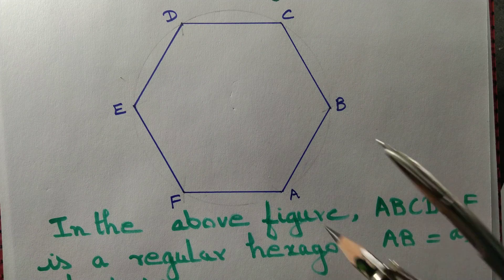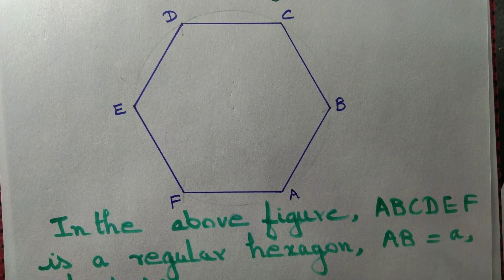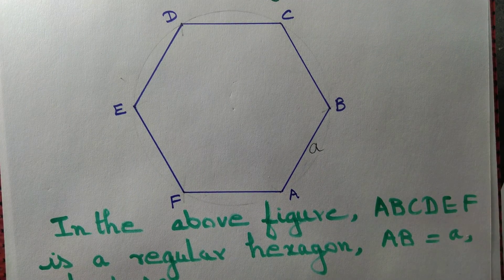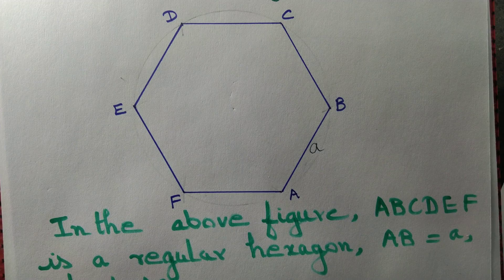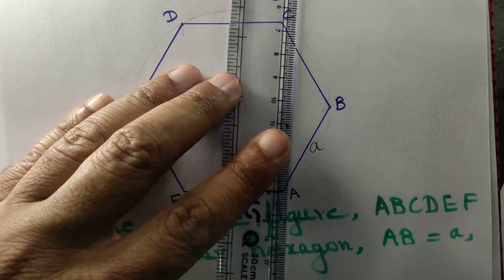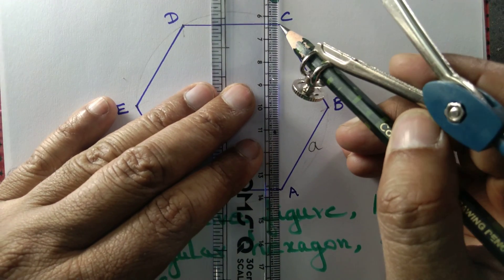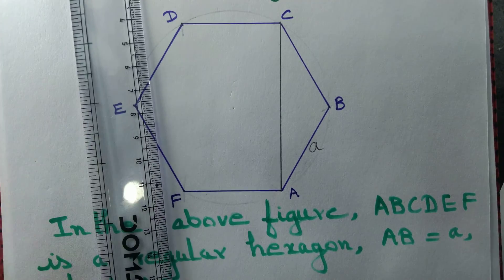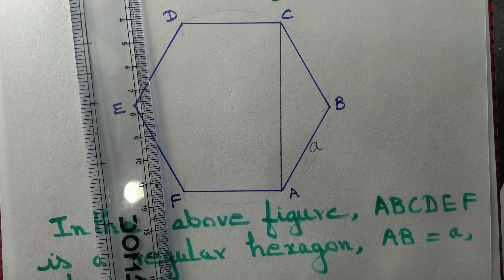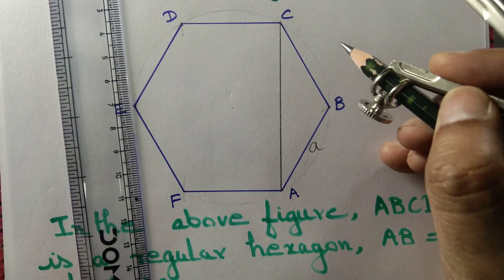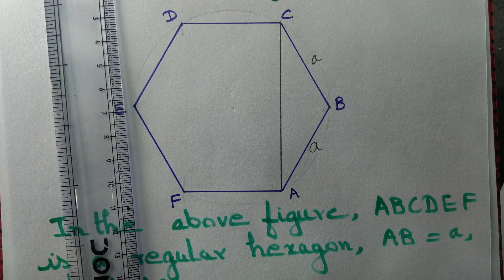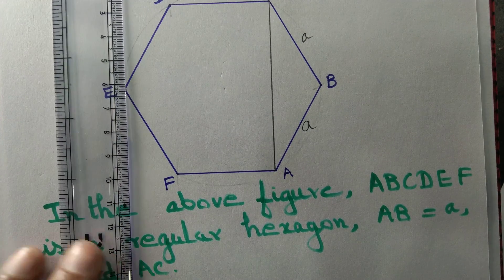In the above figure ABCDEF is a regular hexagon with side AB measuring A unit. Let us find the length of AC. Observe that BC equal to AB since it is a regular hexagon, AB and BC must be equal.